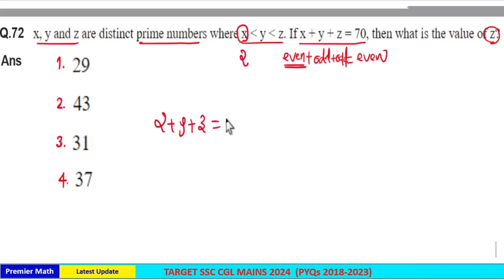So 2 plus y plus z is 70 means y plus z is equal to 68.